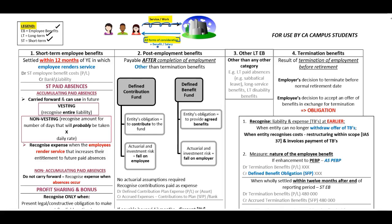IAS 19 distinguishes between four different categories of employee benefits: one, short-term employee benefits; two, post-employment benefits; three, other long-term employment benefits; and four, termination benefits.